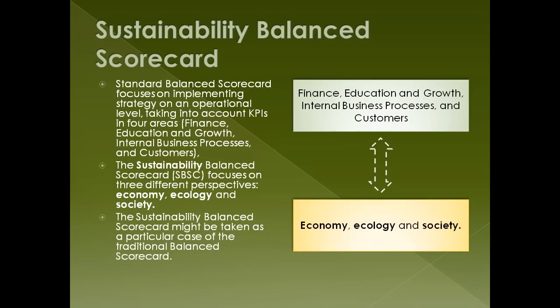While the standard Balanced Scorecard focuses on implementing strategy on an operational level, taking into account KPIs in four areas — finance, education and growth, internal business processes, and customers — the Sustainability Balanced Scorecard, SBSC, focuses on three different perspectives: economy, ecology, and society.